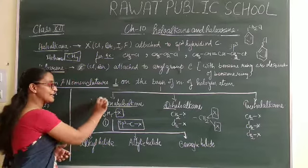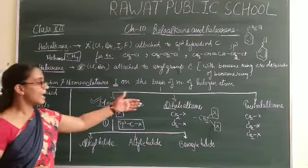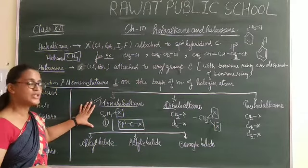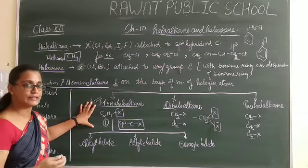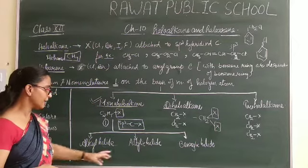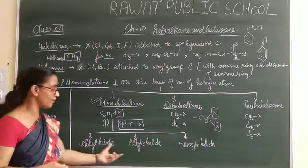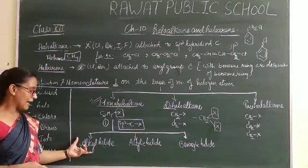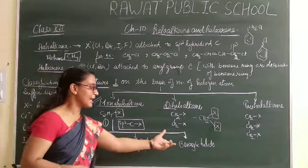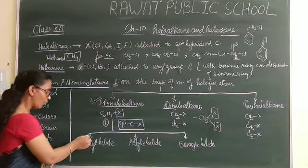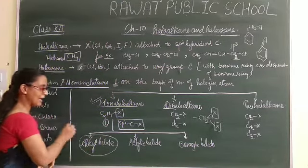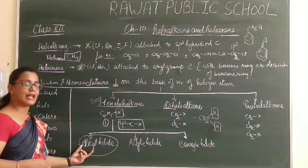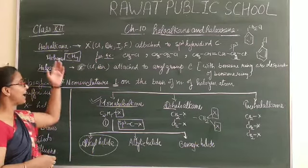Now these Monohalides are further classified, and Dihalides are also further classified. First we have learned about the Monohalides. Basically Monohalides are of three types: Alkyl halides, Allylic halides, and Benzylic halides. What are Alkyl halides? What are Allylic halides and Benzylic halides? In Alkyl halides, the halide is simply attached to an alkyl chain.